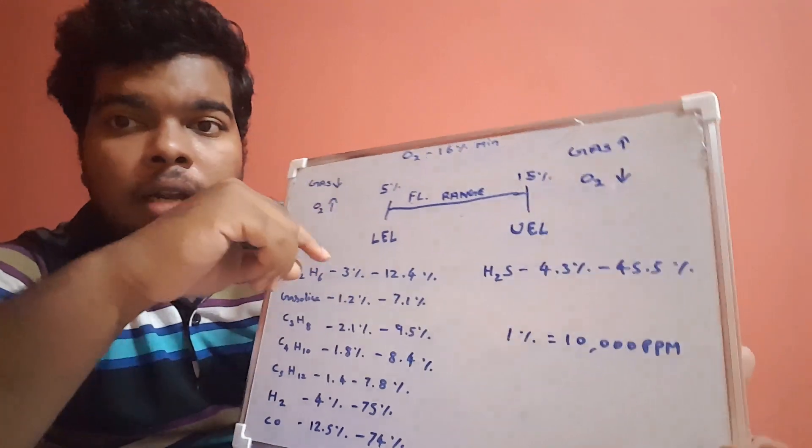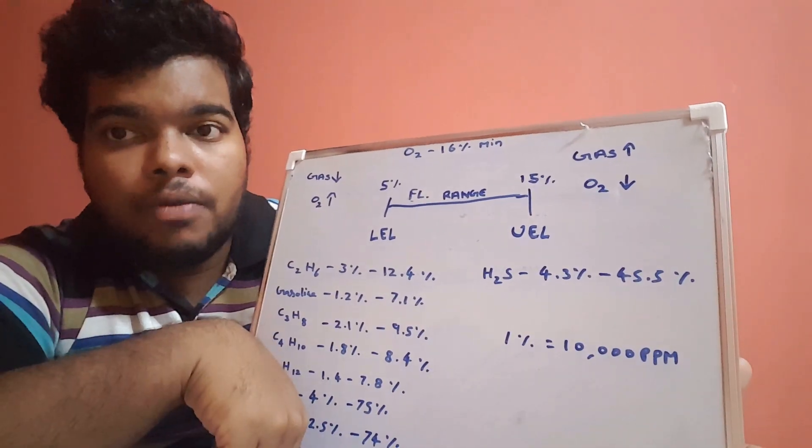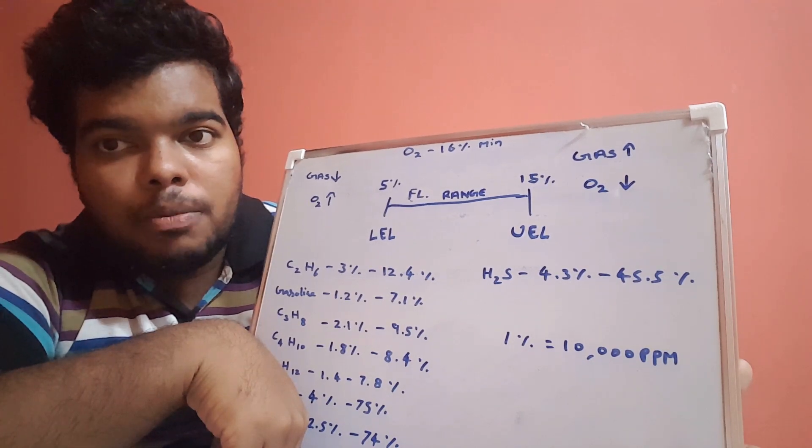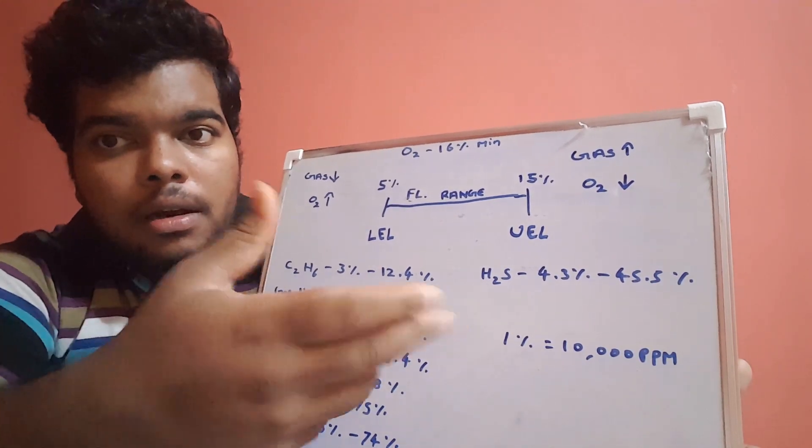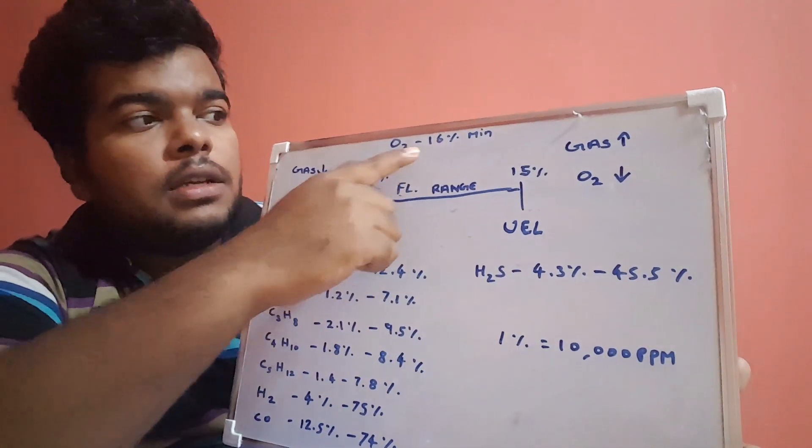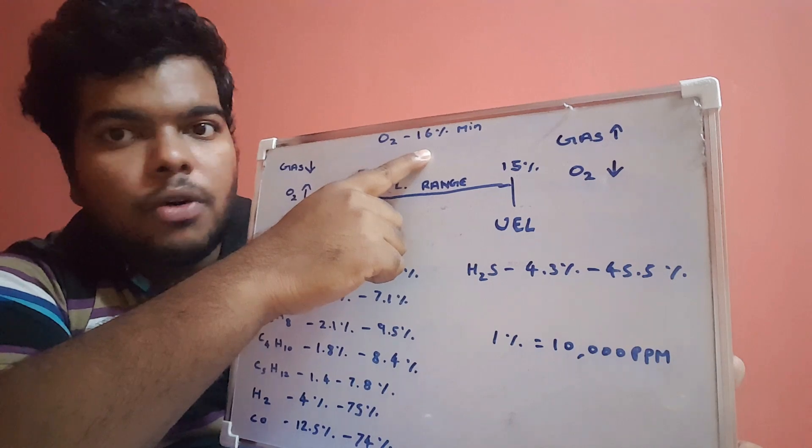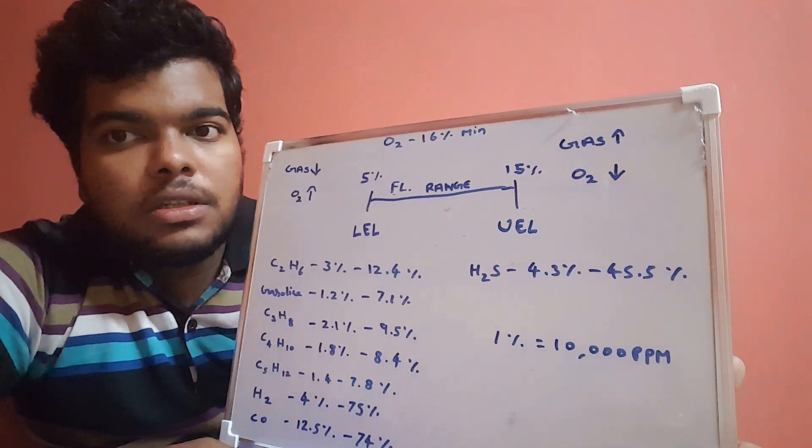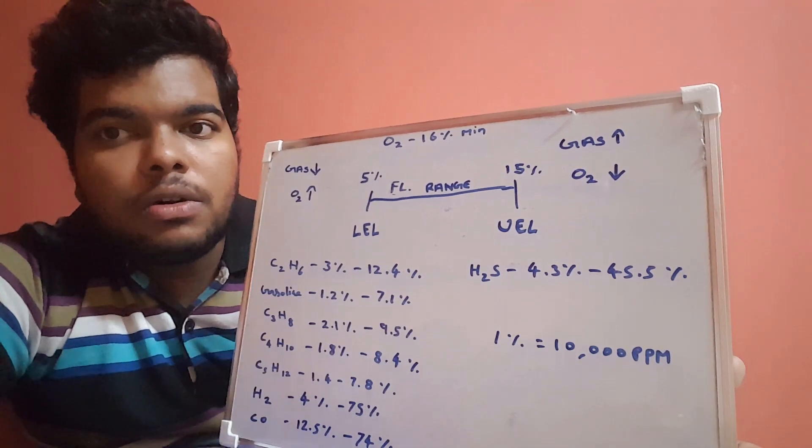Below 19.5 and above 23.5, it will give the alarm indication. For burning, we need at least 16 percentage of oxygen for normal combustion. Below 16 percentage, the ignition will not sustain and the fire will go off.